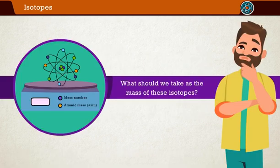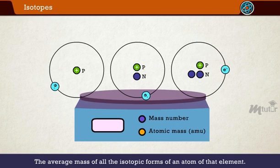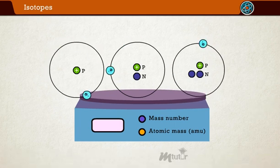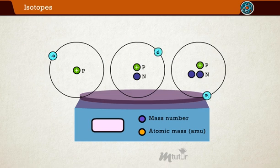Obviously, the question arises now: what should we take as the mass of these isotopes? Let us find out. Well, we can represent it by taking the average mass of all the isotopic forms of an atom of that element. We have to know the percentage of each isotopic form, and then the average mass is calculated.